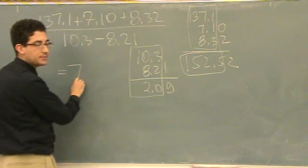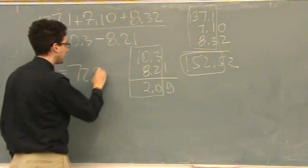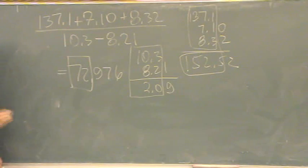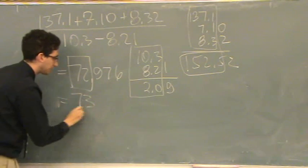So when I do this calculation, I get 72.976, but I can only keep two sig figs, that's these two. I need to make sure to round, so the answer is 73.